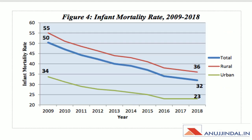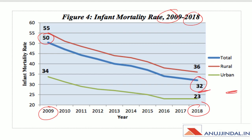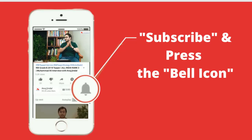This curve compares infant mortality rate for 2009 and 2018. Total IMR was 50 in 2009, while in 2018 it has been reduced to 32. This was the discussion about the Sample Registration System covering birth rate, death rate, and infant mortality rate.